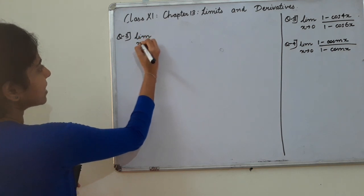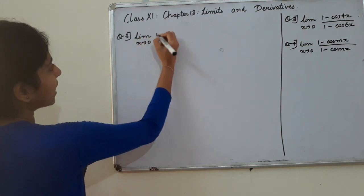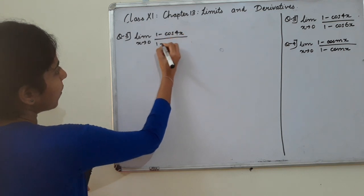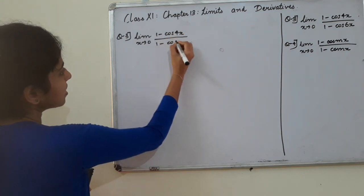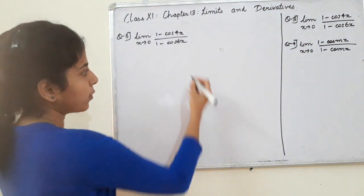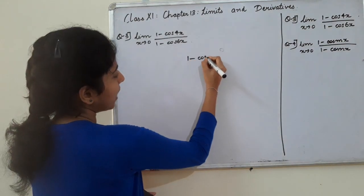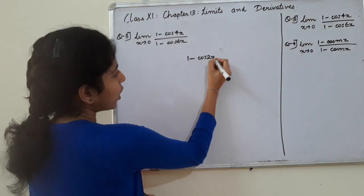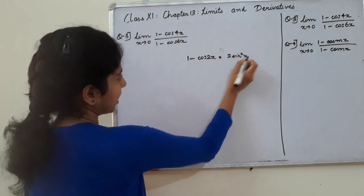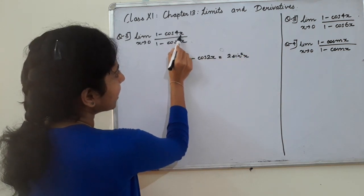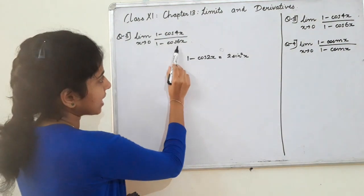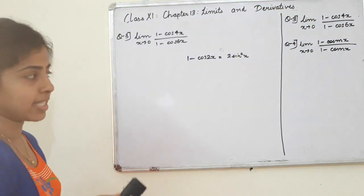Question number 3: limit extending to 0 of 1 minus cos 4x divided by 1 minus cos 6x. We have already found that 1 minus cos 2x equals 2 sin square x. If you have 4x, you get 2x here; for 6x, you get 3x here.